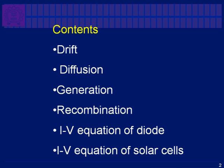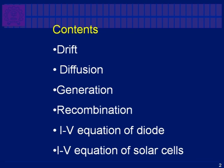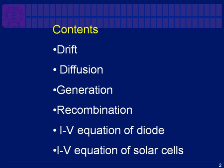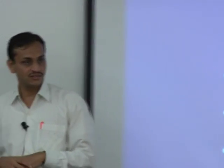Carrier drift and diffusion are the two forces that act upon a charge carrier, resulting in the motion of the charge particle. Drift is a phenomenon that happens in the presence of an electric field — carriers move because there is an electric field. In our solar cell, the electric field only exists at the junction. Diffusion is a phenomenon in which carriers move because of a concentration gradient.